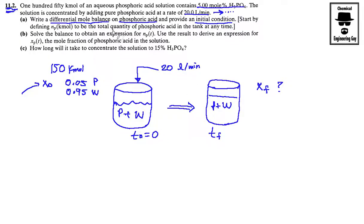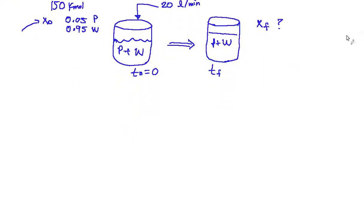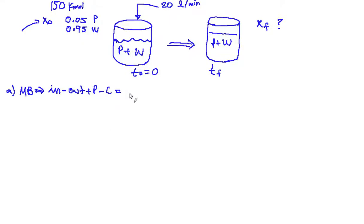They give you this tip: start by defining NP to be the total quantity of phosphoric acid in the tank at any moment or any time. So let's do this — we're going to do a mass balance. From the mass balance equation: inlet minus outlet plus production minus consumption should give you the accumulation in this system.